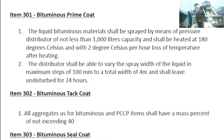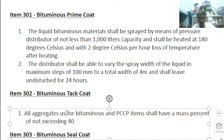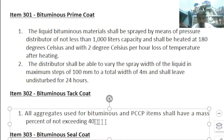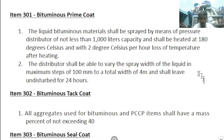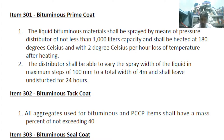Item 302 is Bituminous Tack Coat — tack coat is the correct spelling. All aggregates used for bituminous and PCCP Portland cement items shall have a mass percent of wear not exceeding 40 percent.